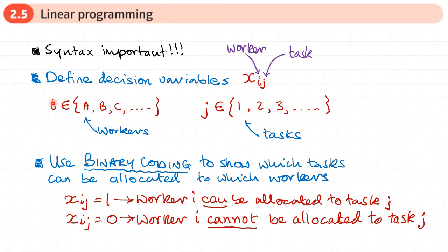Once we have these, we follow three steps in linear programming: first, define our decision variables as above; next, write down the objective function — which could be maximizing profit, minimizing cost, or minimizing time; and then write down the constraints, which will incorporate this binary coding.